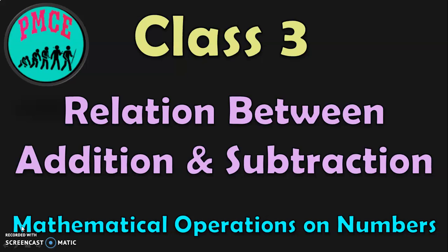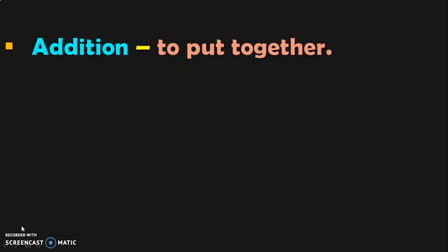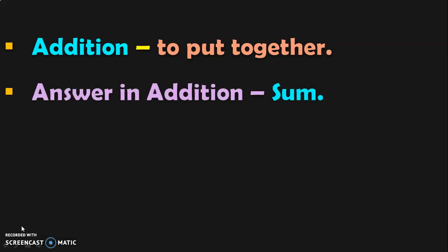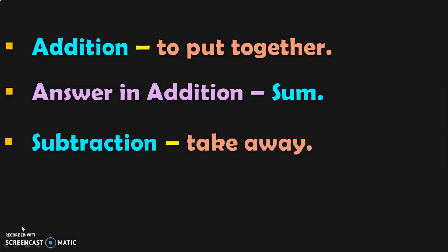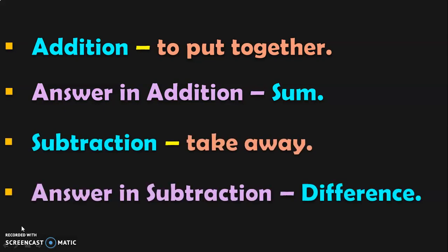Once you know the relation between addition and subtraction, we can do subtraction and verify the answer with the help of addition. We know that addition and subtraction are mathematical operations on numbers. Addition means to put together, and the answer in an addition is called the sum. Subtraction means take away, and the answer in subtraction is called the difference.